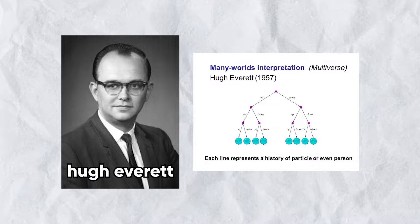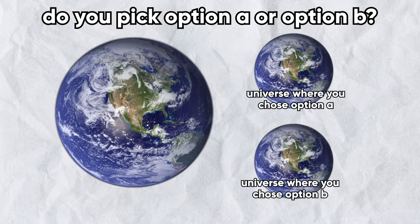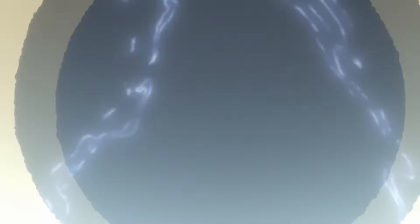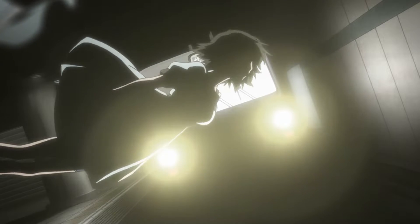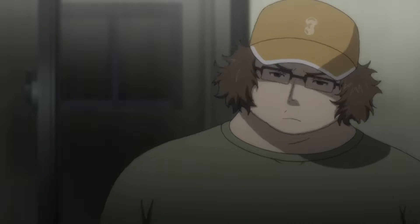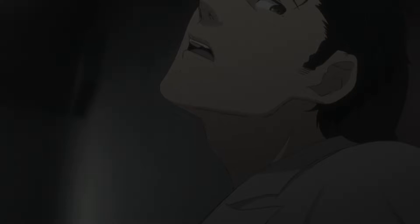In his 1957 dissertation, Hugh Everett proposed the many worlds interpretation — the idea that multiple worlds can exist at the same time using quantum mechanics. This gives us the common theory of parallel worlds, which can represent an infinite or non-definable amount of deterministic outcomes. In other words, every possible version of the universe could exist. When you apply this to Steins;Gate, every time Okabe makes a time-based change, the altered world line shifts into existence and replaces the previous world line entirely, changing everything except Okabe's memories because of his Reading Steiner ability.